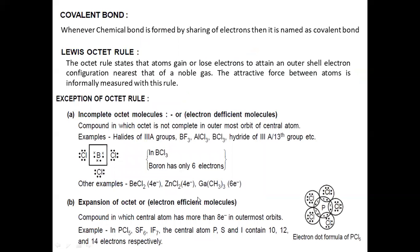Covalent bond: whenever a chemical bond is formed by the mutual sharing of electrons, it is named a covalent bond. Lewis octet rule states that atoms gain or lose electrons to attain an outer shell electron configuration nearest that of a noble gas.